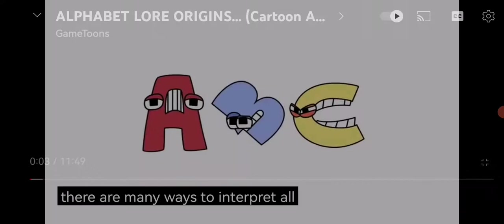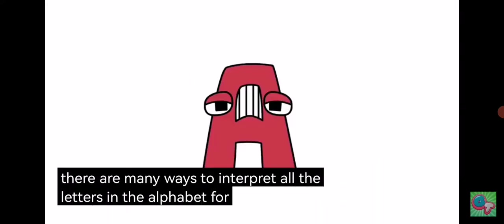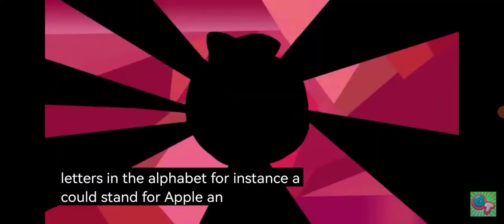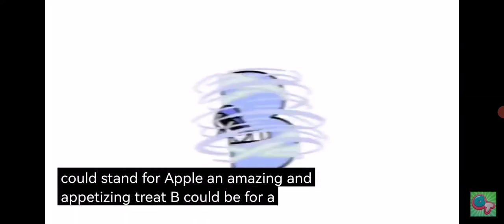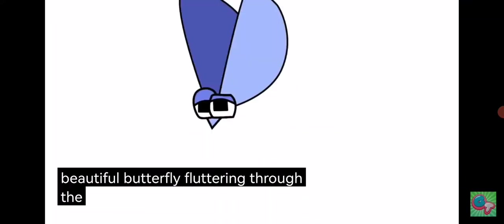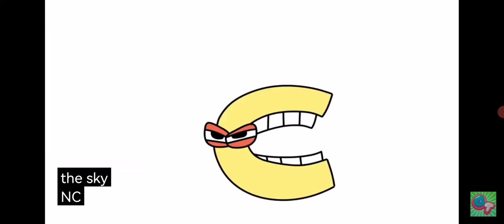There are many ways to interpret all the letters in the alphabet. For instance, A could stand for apples, an amazing and appetizing treat. B could be for a big beautiful butterfly fluttering through the sky, and C could be all sorts of things.